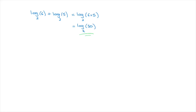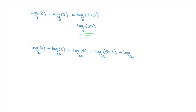Another example: we're given the expression log base 10 of 8 plus log base 10 of 2 plus log base 10 of 5, and we're asked to simplify this logarithmic expression. We can see that we have three logarithms all being added together, and each is written in the same base, which is 10. So we use the rule working from left to right: this equals log base 10 of 8 times 2 plus log base 10 of 5, where I obtained log base 10 of 8 times 2 using the rule with the first two terms.